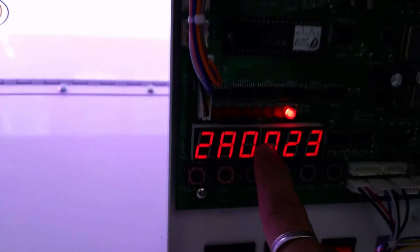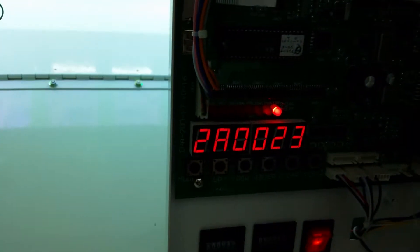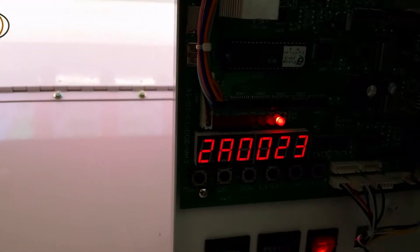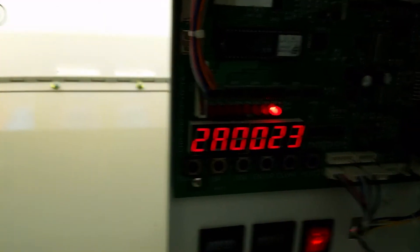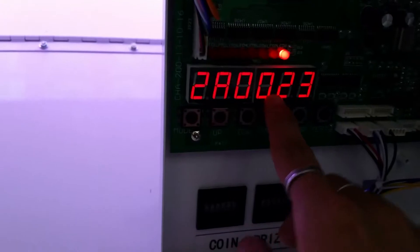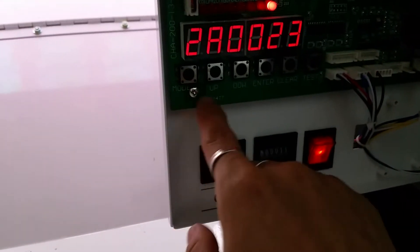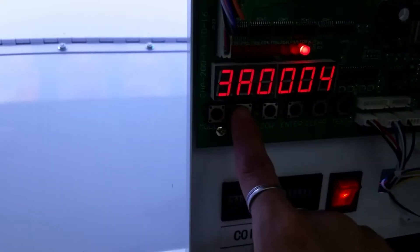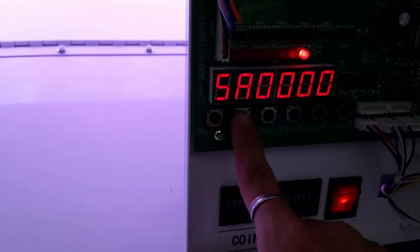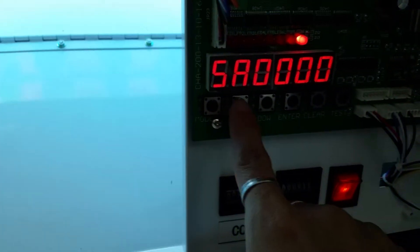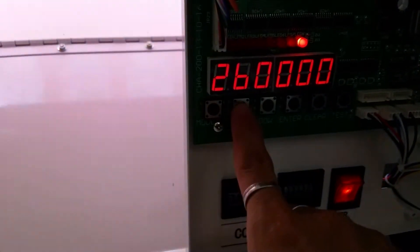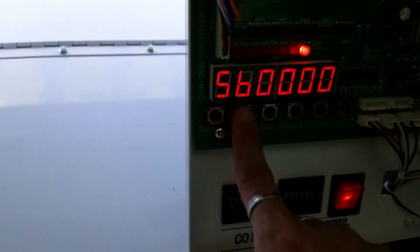Now you can see 2A means the second button from left to right, showing 23 times hit. Press the up button to navigate through 3A, 4A, 5A, 1B, 2B, 3B, 4B, 5B.